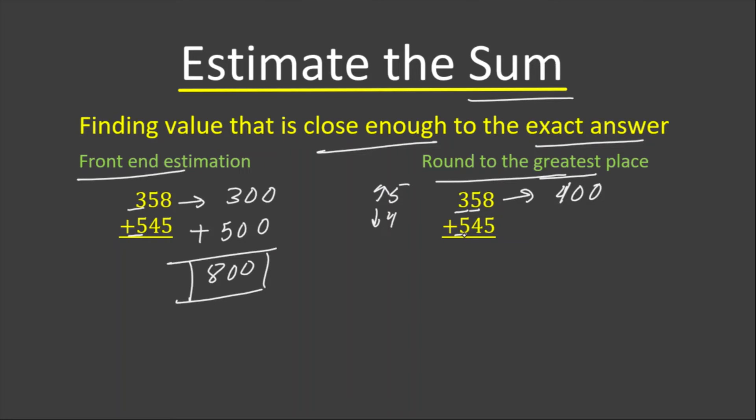The second number, or the number at the bottom, again we compare the digit in the tens place with five - five or more or four or less. We see that this digit is four or less, so we round it down and write 500. Now we add the rounded numbers. Zero plus zero is zero, zero plus zero is zero, and four plus five is nine.